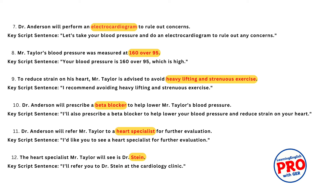Let's take your blood pressure and do an electrocardiogram to rule out any concerns. Your blood pressure is 160 over 95, which is high — we'll need to address that. It's something we'll monitor closely. In the meantime, I recommend avoiding heavy lifting and strenuous exercise. I'll also prescribe a beta blocker to help lower your blood pressure and reduce strain on your heart. I'd like you to see a heart specialist for further evaluation — I'll refer you to Dr. Stein at the cardiology clinic. Let's book a follow-up in two weeks to check on your progress and see how you're responding to the medication.